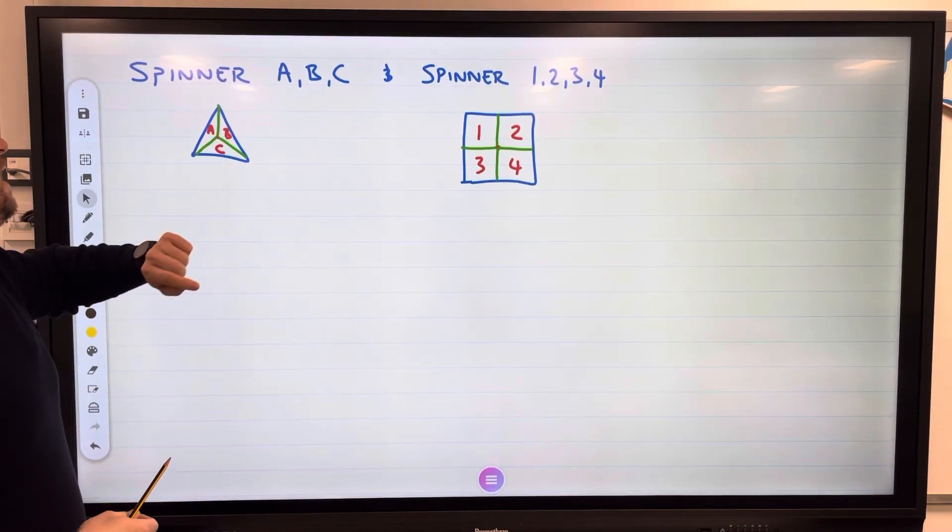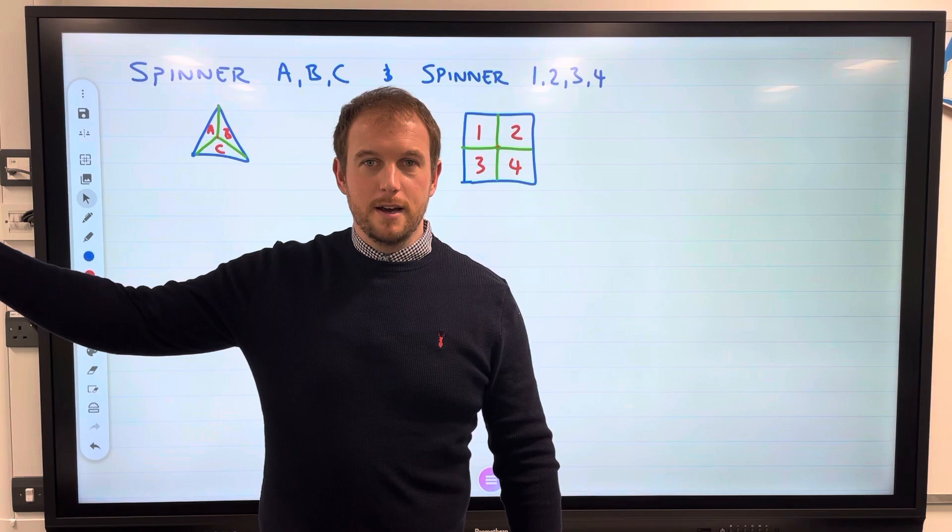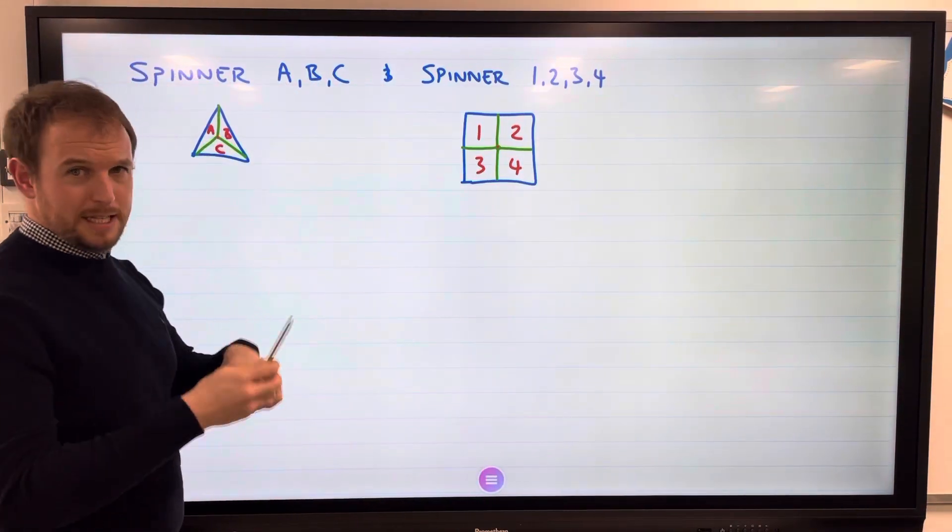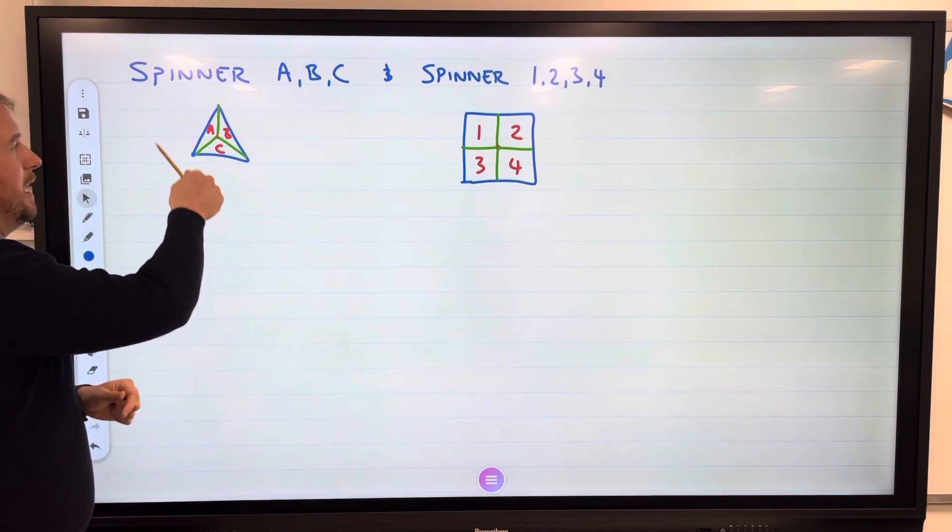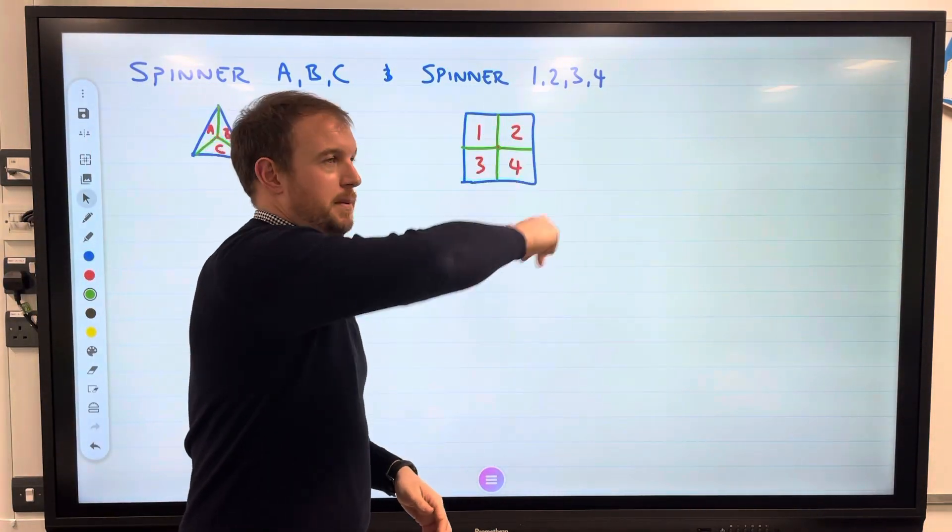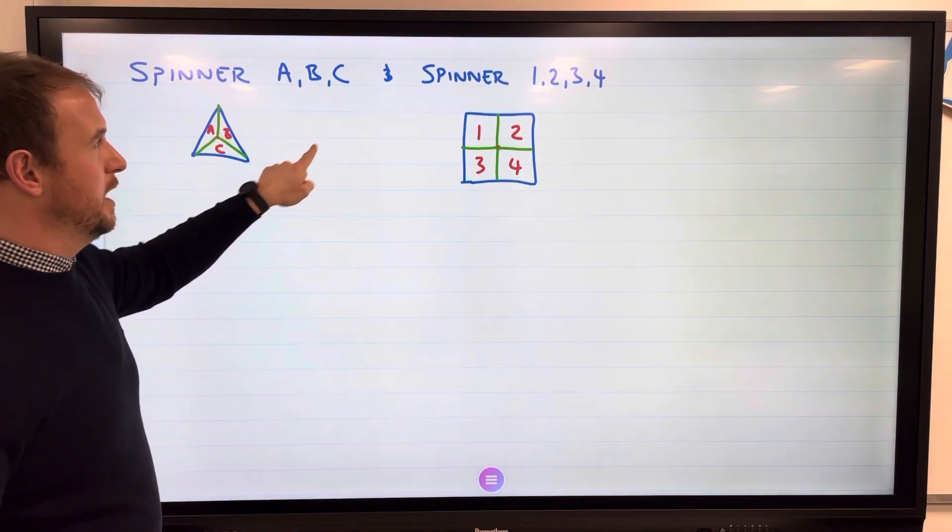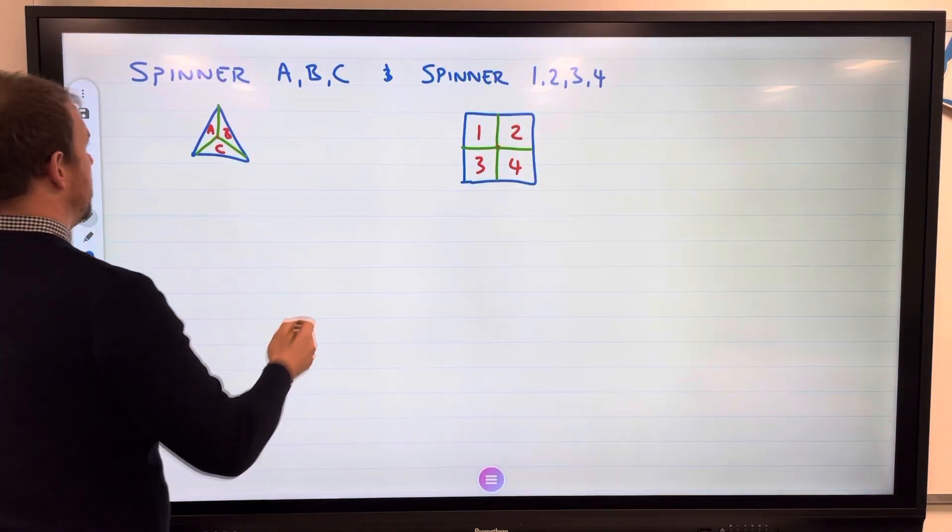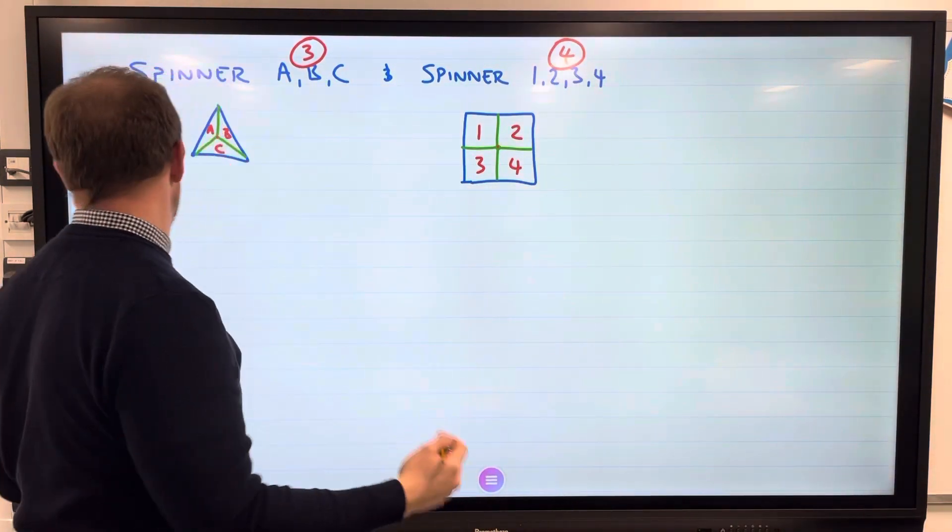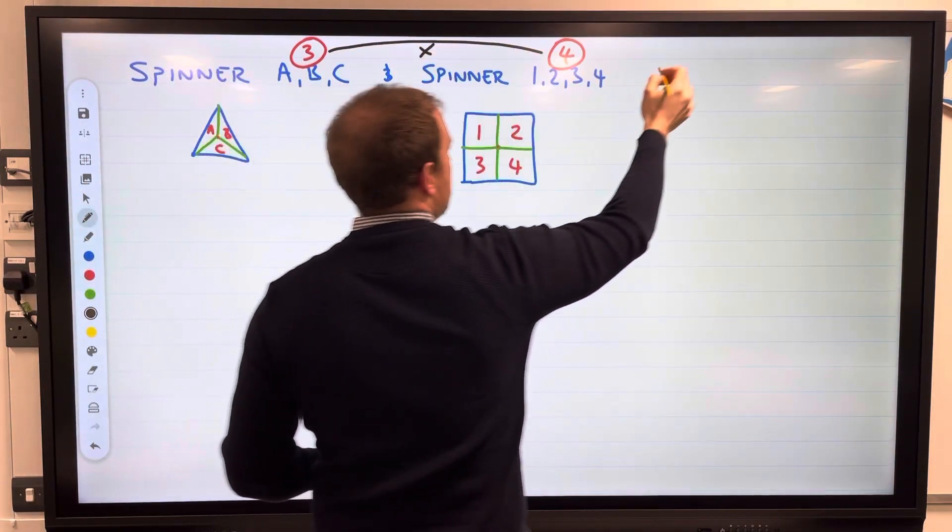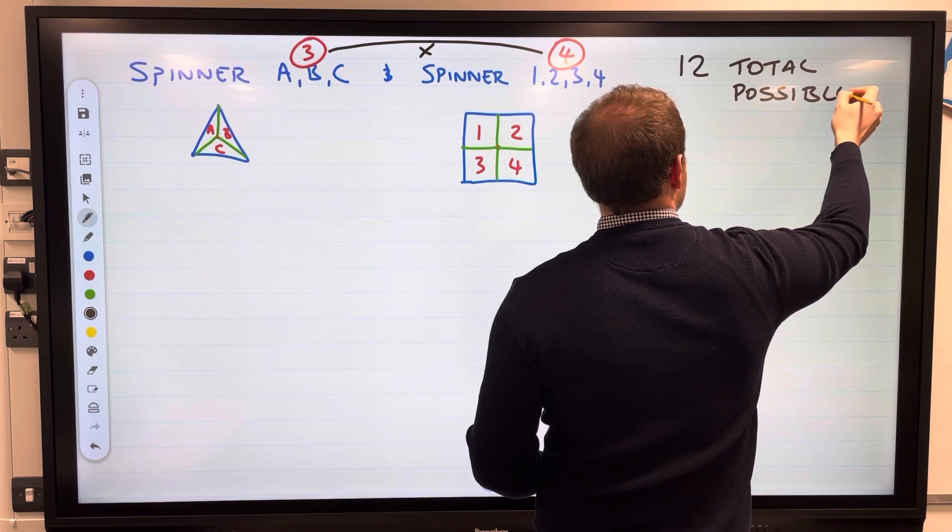How about a spinner which has A, B, C in it and a spinner that has one, two, three, four? Spinners were back in the olden days - you have to imagine a little stick sticking between there, spin it and it will land on one of them. Here we have A, B, C. Here we have one, two, three, four. We have three possible outcomes here, four possible outcomes here. Total possible outcomes: we multiply these, so we know again we have twelve as our total possible outcomes.